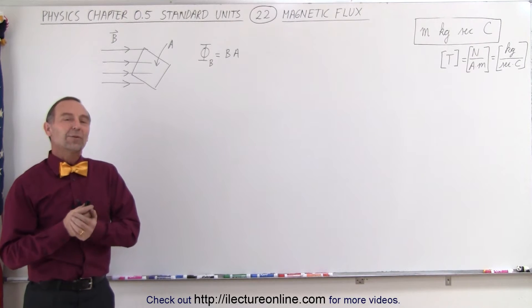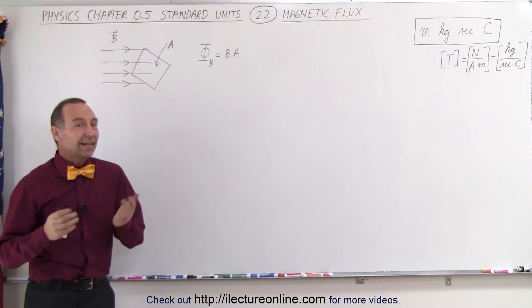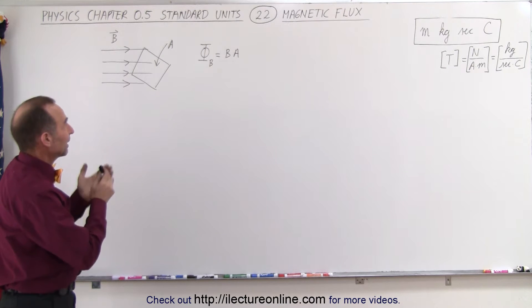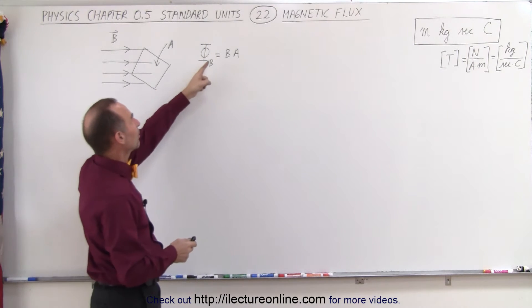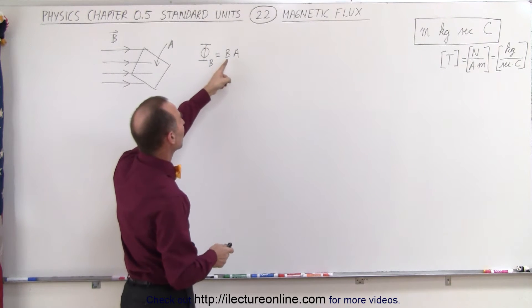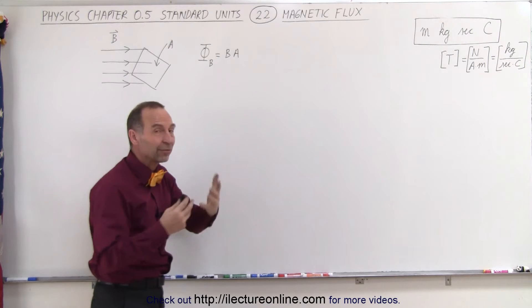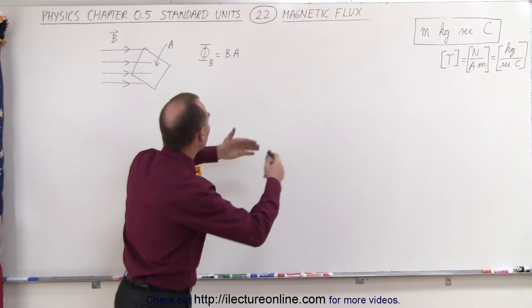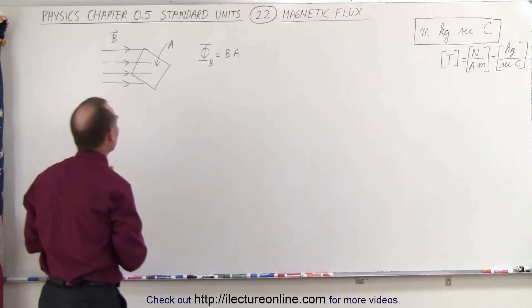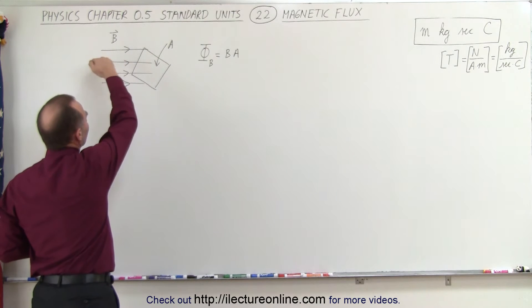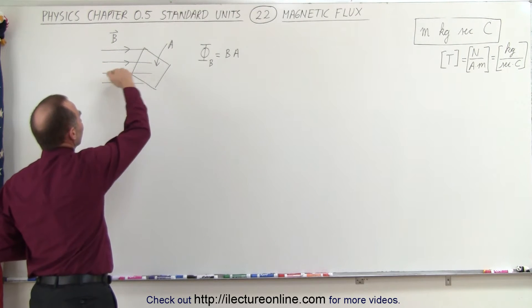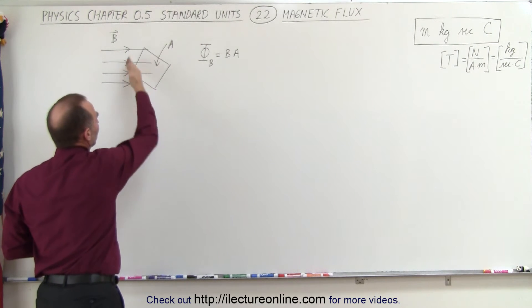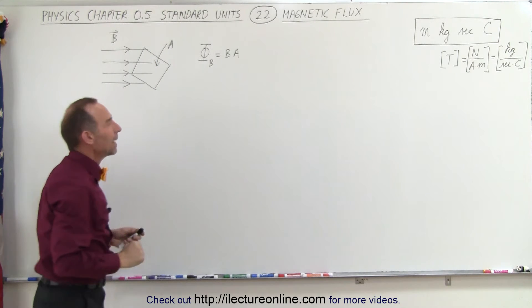Welcome to ElectronLine. Now let's talk about the magnetic flux. By definition, the magnetic flux is simply the product of the B field — the strength of the magnetic field — times the cross-sectional area through which the magnetic flux passes. Here we have magnetic field lines representing the magnetic field passing through an area called A.